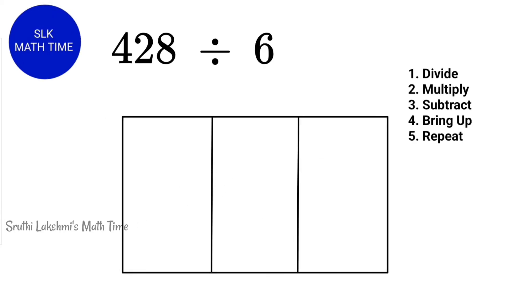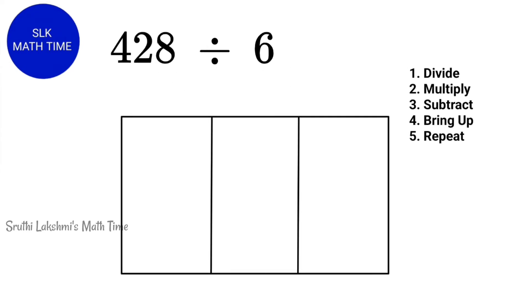Now, let's see one final example, which is 428 divided by 6. Here, 428 is our dividend and 6 is our divisor. So, let's write 4, 2, 8 and 6 outside the rectangle like this. Now, we are going to divide. So, how many 6's can fit in 4? Well, 0.